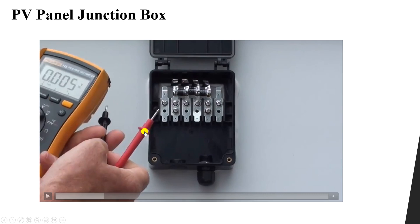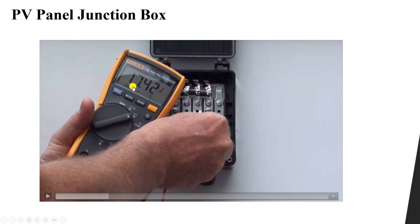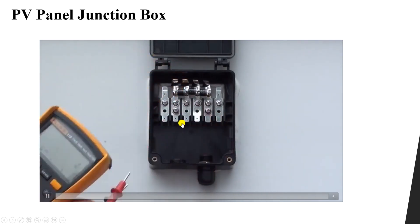To identify which terminal is positive and which is negative, we use an AVO meter. Take the red probe representing the positive and the black probe representing the negative, and connect them to the two terminal points. If the voltage reading is 17.42 volts — a positive value — it means the connection is correct: the red is on the positive terminal and the black is on the negative. If the reading is negative, the connections are reversed.